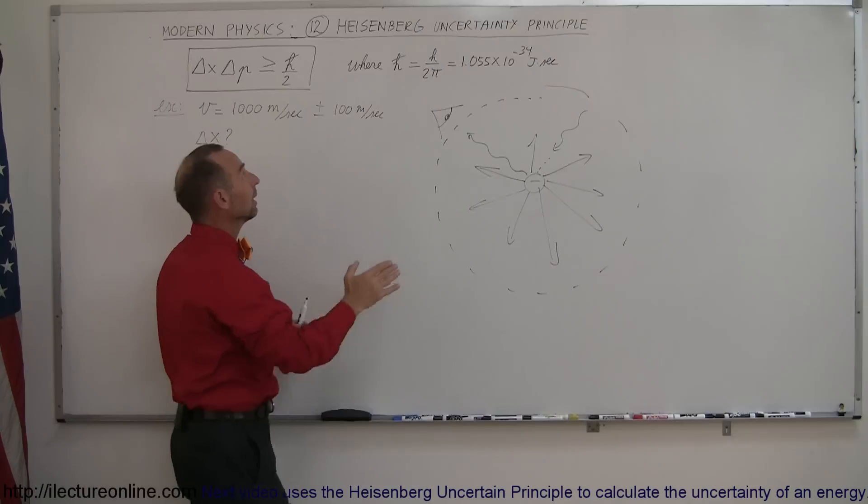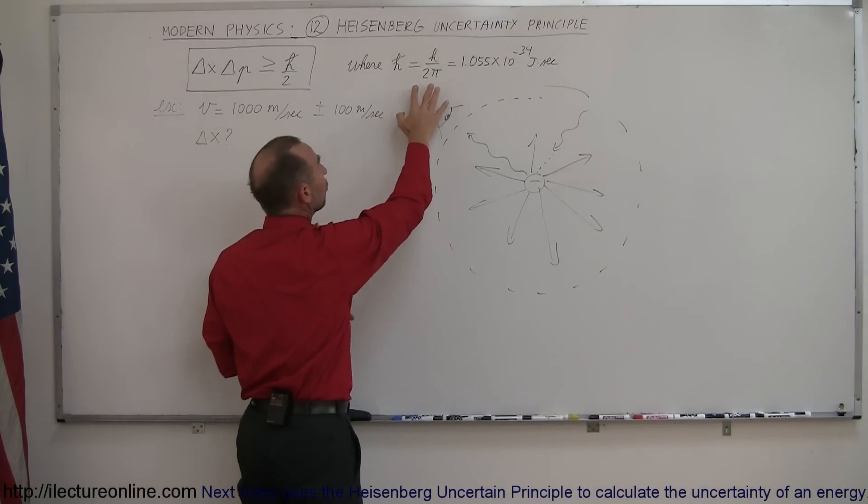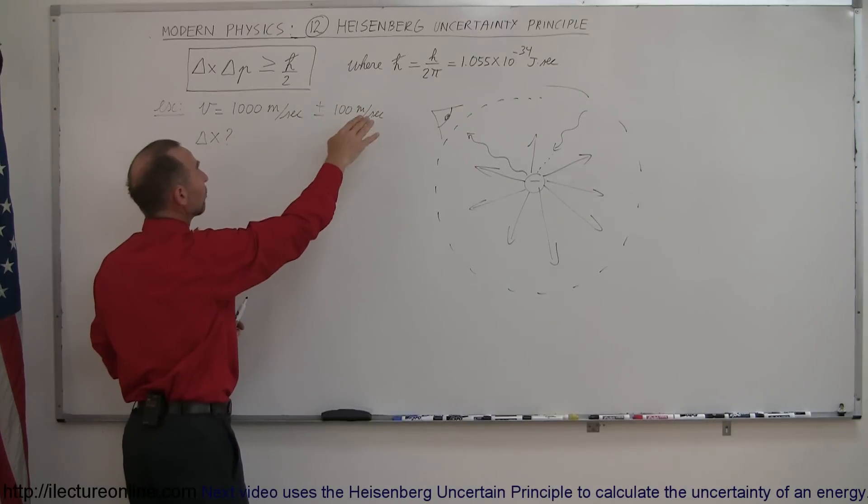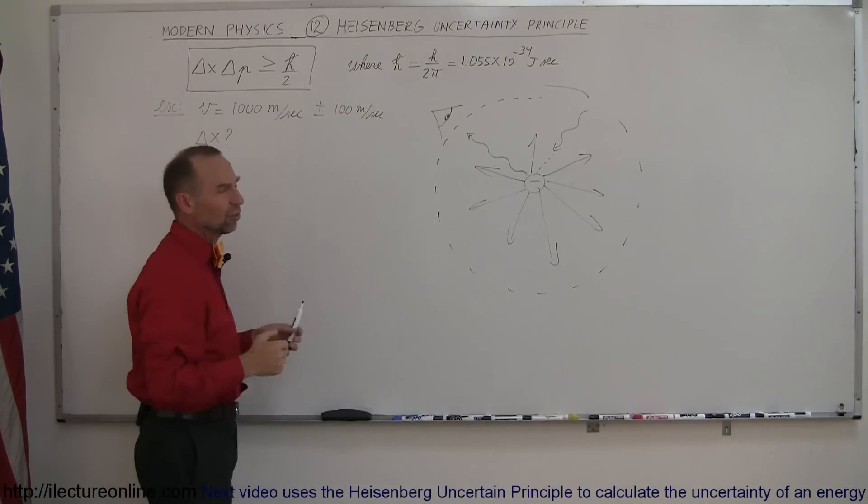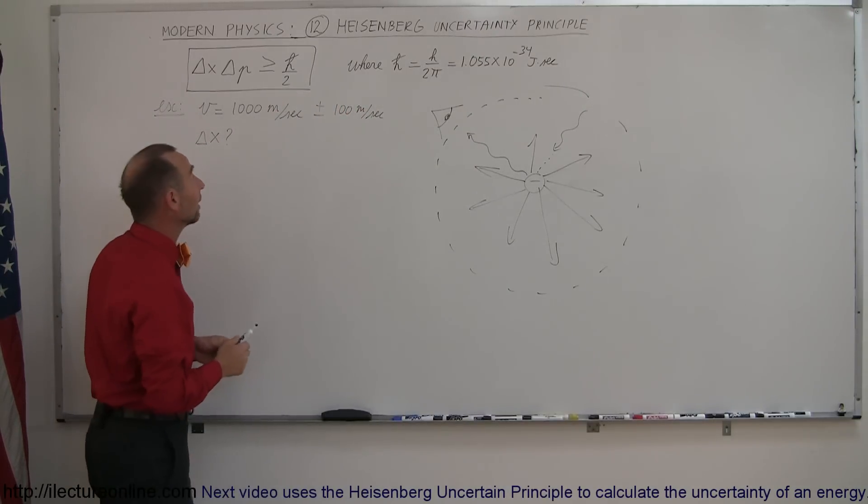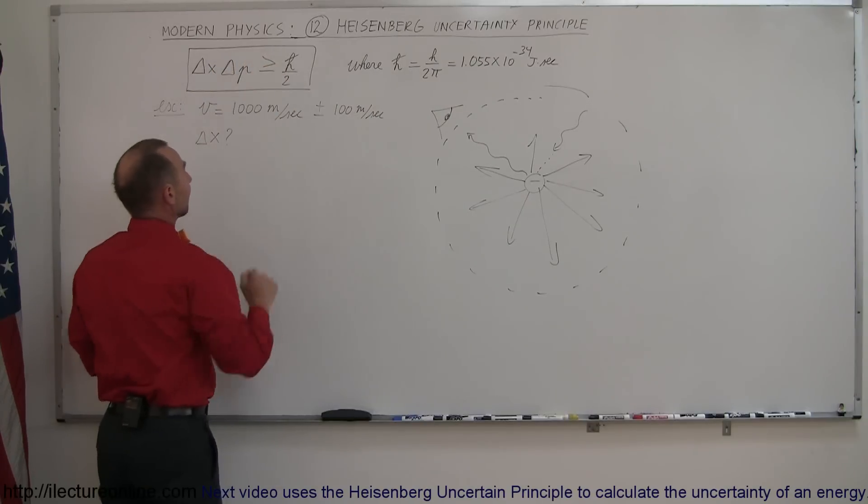Now h-bar is simply the Planck's constant divided by 2 pi. So if you take h divided by 2 pi and then divide that by 2, which therefore becomes h divided by 4 pi, this product will always be bigger than that.